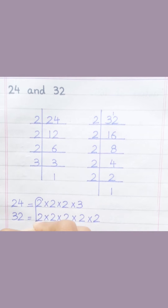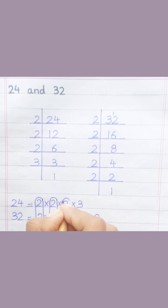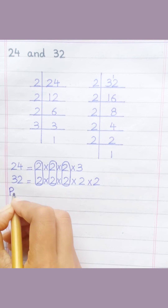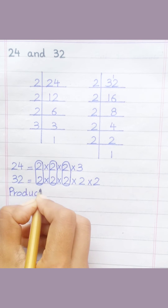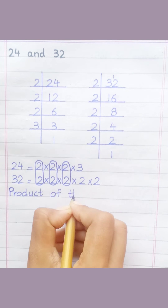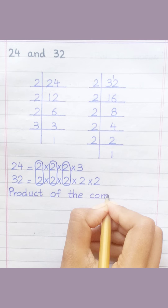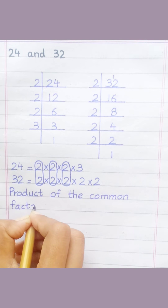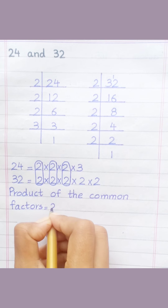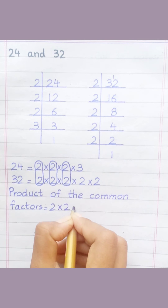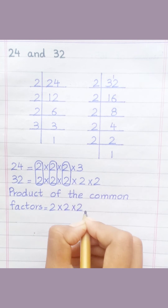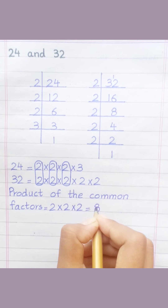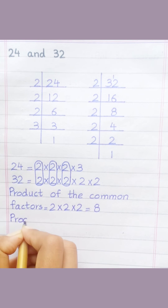Loop the common prime factors among both. Product of the common factors equal two multiply two multiply two equal eight.